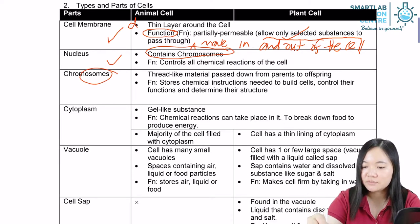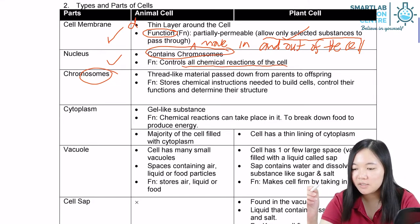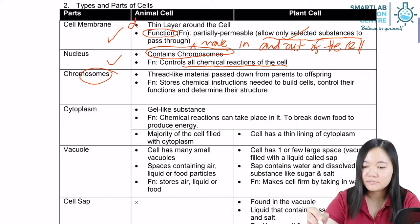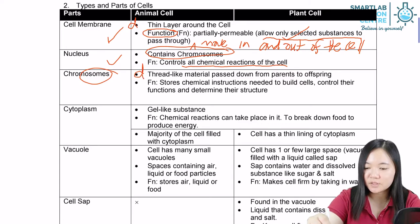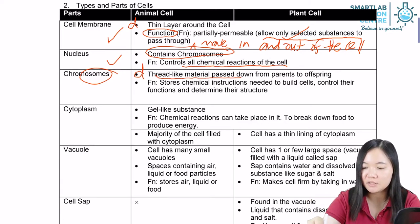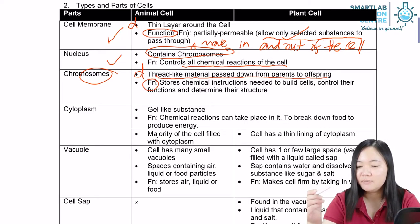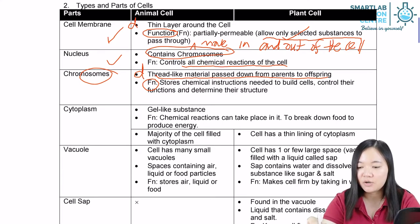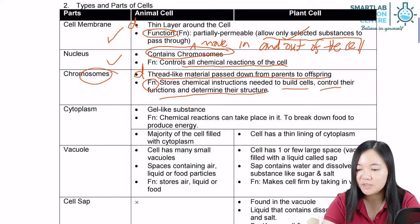What is the function of the nucleus? The function is to control all reactions in the cell. Now for chromosome — here is the description: chromosome is a thread-like material passed down from parents to offspring. But as I mentioned, description is not that important. Function is frequently tested. The function of chromosome is that it stores the chemical instructions needed to build cells, and it controls their function and determines their structure.